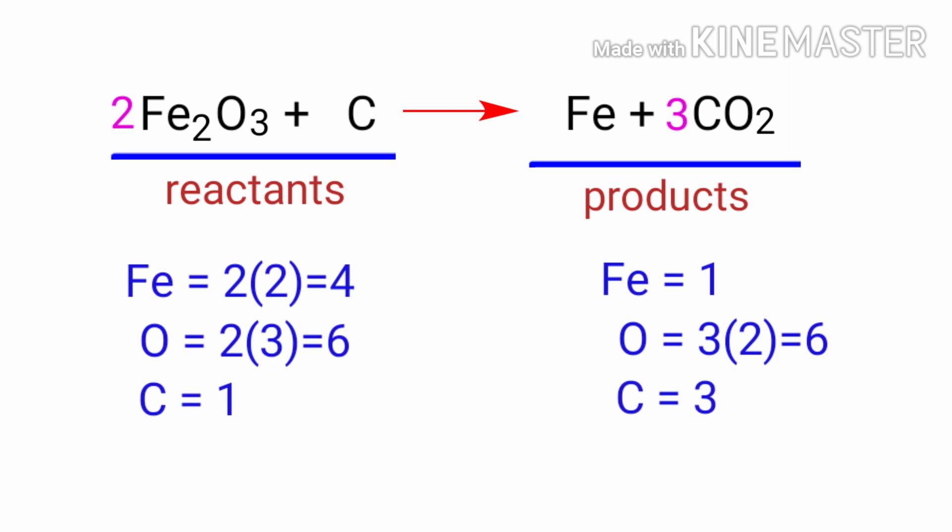The oxygen atoms are balanced. Now we need to balance the iron and carbon atoms. To do this, we need to put a coefficient of 4 in front of Fe and a coefficient of 3 in front of C.